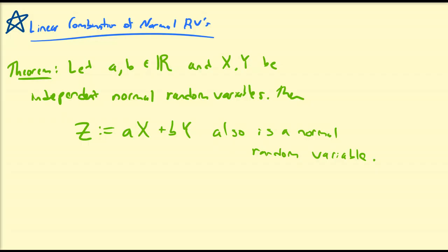The main idea we're going to be focused on is centered around this theorem. Let a and b be real numbers and let X and Y both be independent normal random variables — they are i.i.d. random variables. We're going to define a new random variable Z which is defined by the linear combination of X and Y. As long as X and Y are independent normal random variables, this new variable — the linear combination of X and Y — also is a normal random variable.